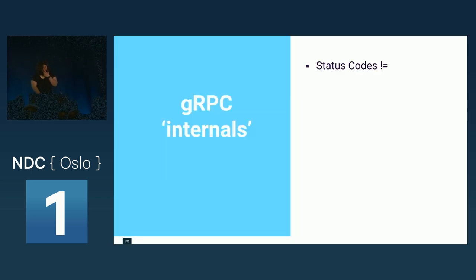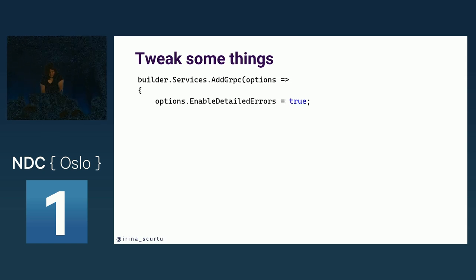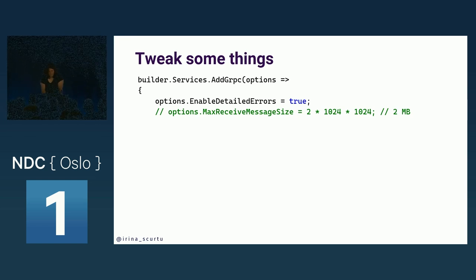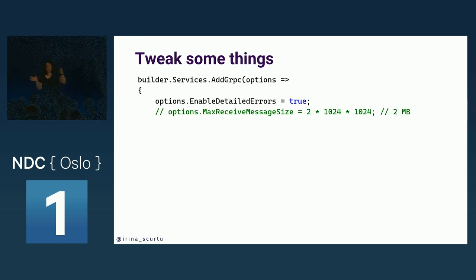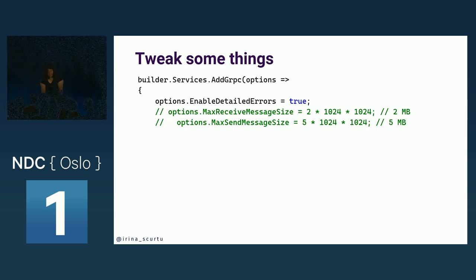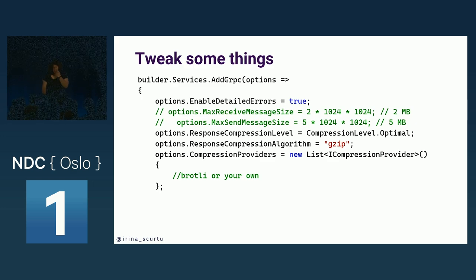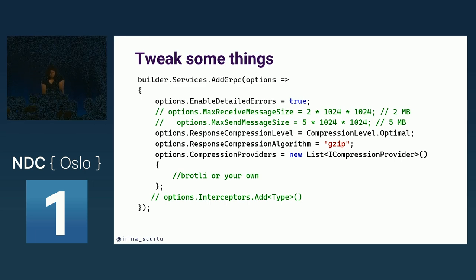There are other things you can tweak for gRPC requests. You can specify the maximum message size suitable for you. There is a guideline that no message size should be more than one megabyte, because otherwise you'll see performance penalties. It's not intended for transferring gigabytes of data over gRPC messages — there are other technologies for that, but you can chunk the data into one-megabyte pieces and send over the network. You can also configure the maximum send message size, the compression level, compression algorithm, specify your own compression provider, and add interceptors.